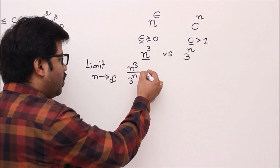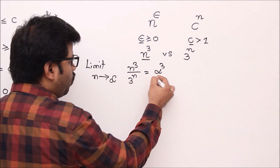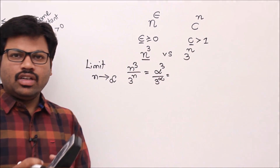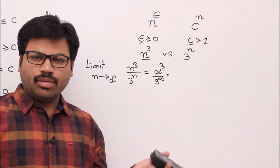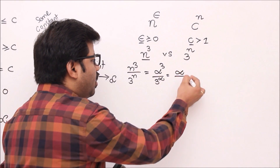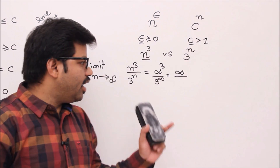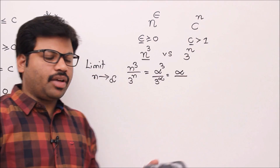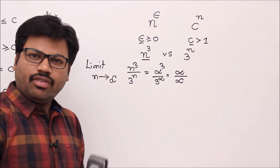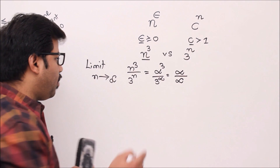Directly applying n = ∞, we get ∞³ by 3^∞. Since ∞³ is infinite and 3^∞ is also infinite — multiplying 3 infinitely many times gives a very large number — we get the ∞/∞ indeterminate form. Whenever we get this form, we apply L'Hôpital's rule.